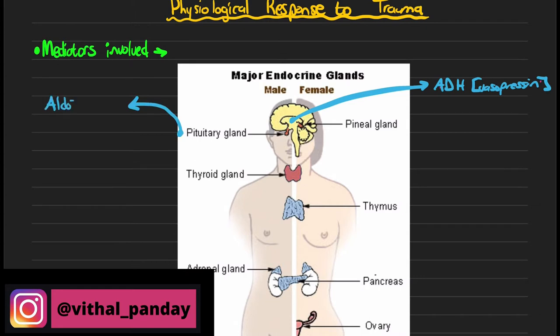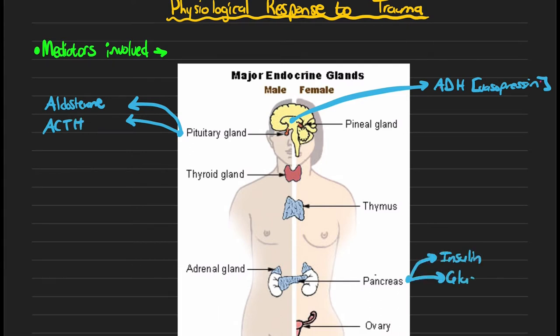In the hypothalamus we get the involvement of ADH, which is your vasopressin. In the pituitary gland we see the involvement of aldosterone and ACTH. Moving through to the pancreas, we have the involvement of insulin and glucagon.